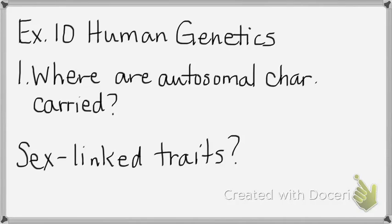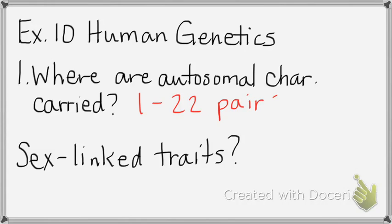This is specifically for humans: where are the autosomal characteristics carried? With 23 pairs of chromosomes, the autosomal chromosomes are pairs 1 through 22.